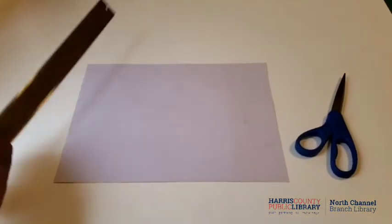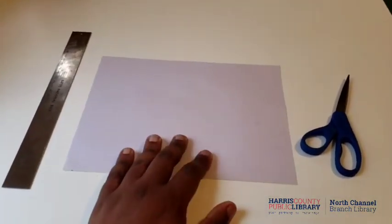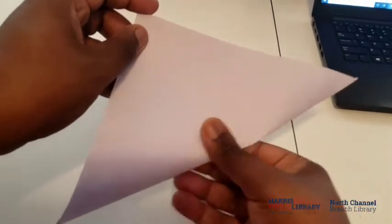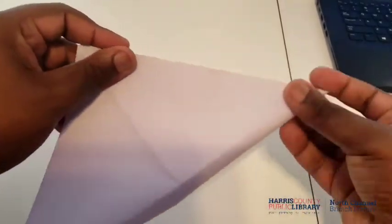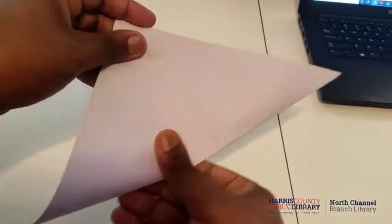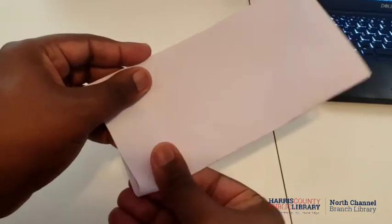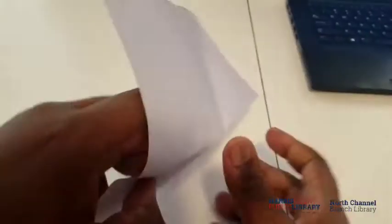Using our trusty ruler and eight and a half by eleven sheet of paper and our trusty scissors, we're going to cut this paper into a square. Then we're going to fold that square diagonally, diagonally again across the other axis, and then vertically and horizontally just like this.